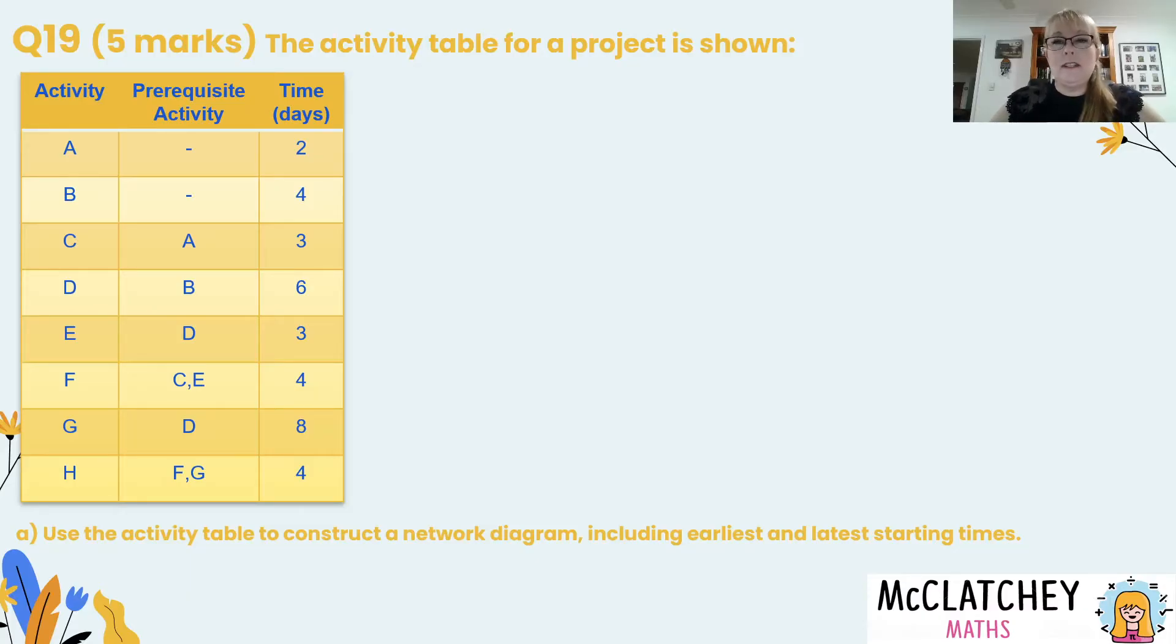We've been asked to use this table to construct a network diagram including our earliest and latest starting times. That means we need to build the diagram and then forward and backward scan. So let's start with our first activities that don't have a prerequisite. That's activities A and B.